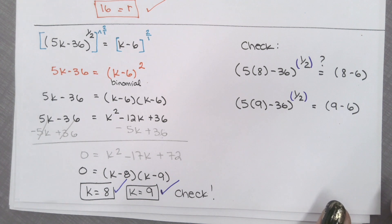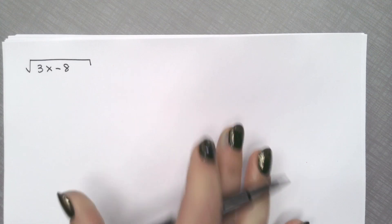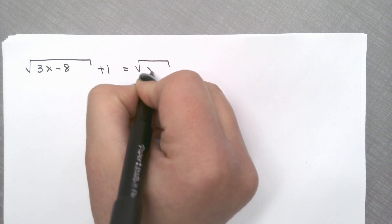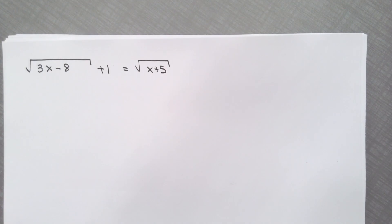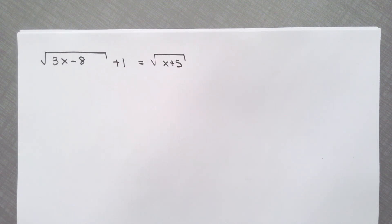Okay, that's solving equations. Now let's solve equations with radicals. Let's do a square root. We got the square root of 3x minus 8 plus 1 is equal to the square root of x plus 5. Something like this — 100% guaranteed, this is on the test. Not only do you have to get rid of the radical once, you're going to end up having to get rid of the radical twice. Please make sure to know how to do this question.